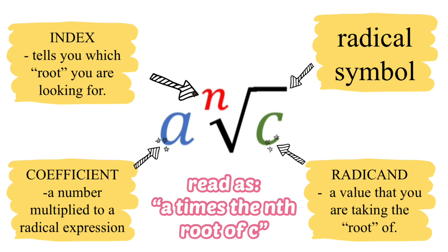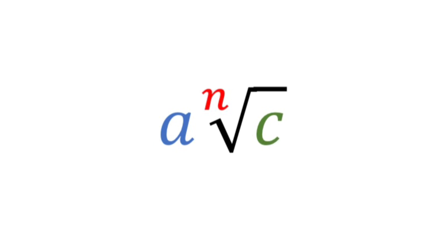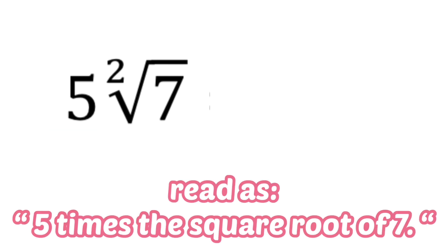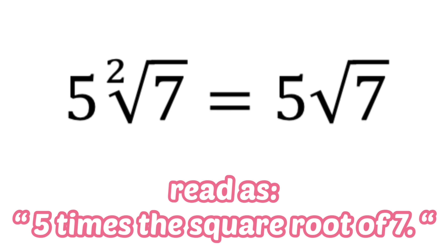Now let's look at some specific illustrations of radical expressions. This expression is read as 5 times the square root of 7, where our 5 is the coefficient, the 2 is the index, and the 7 is the radicand. Since the index is 2, we don't have to write it — it becomes invisible. So we rewrite this as 5 times the square root of 7. These two are the same.